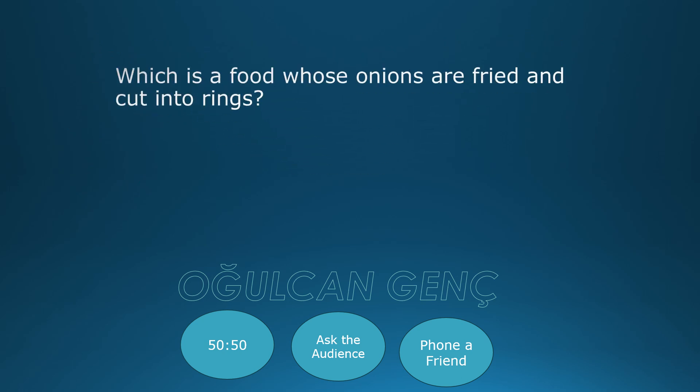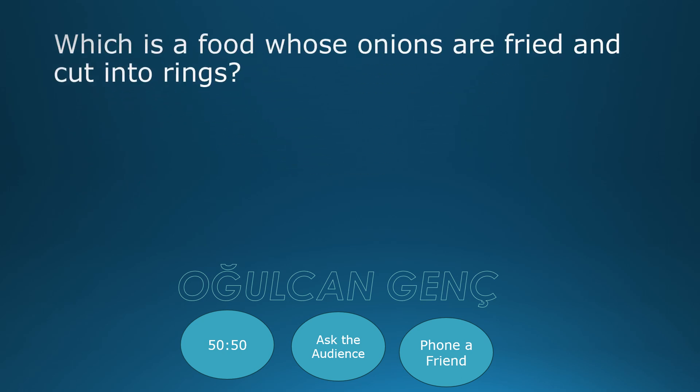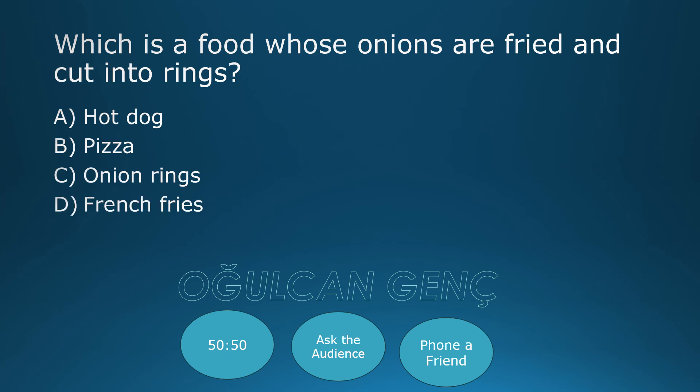Which is a food whose onions are fried and cut into rings? Hot dog, pizza, onion rings, french fries. Correct answer: Onion rings, C.